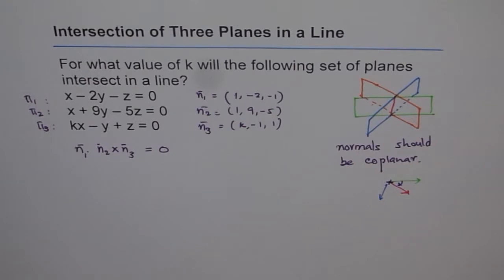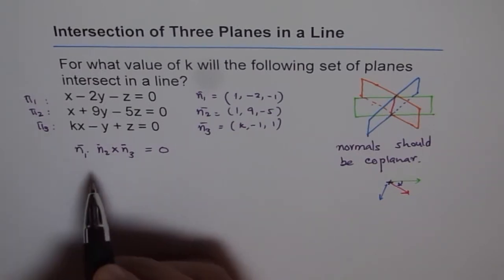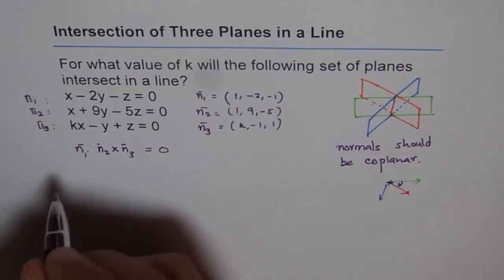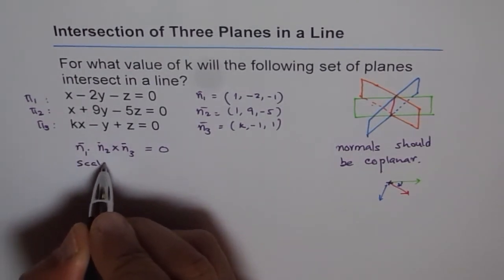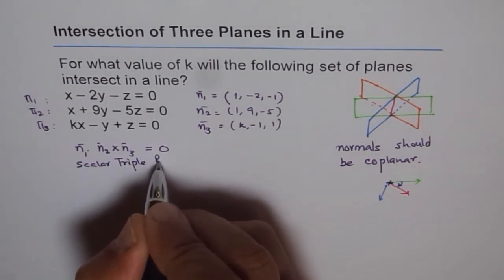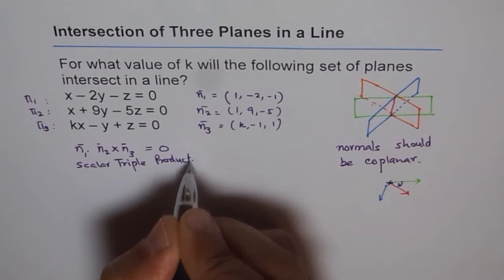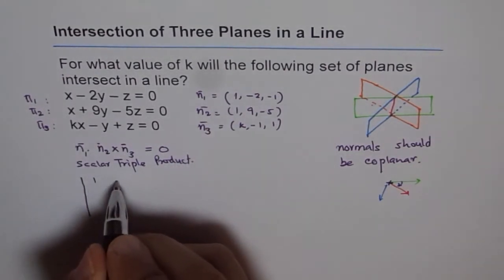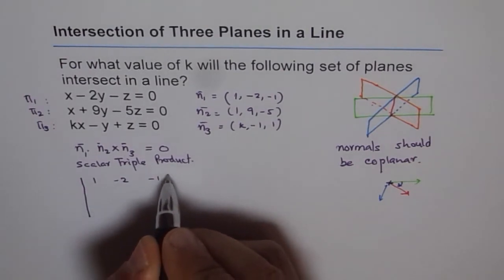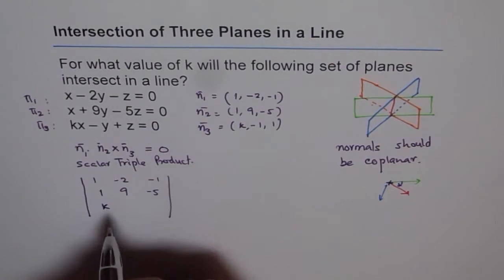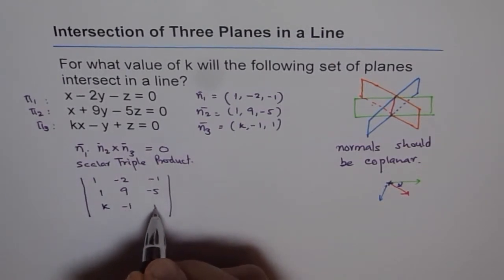So let's figure out this value of k by doing scalar triple product. This is called scalar triple product. Okay, so n1 is (1, -2, -1), (1, 9, -5) and we have (k, -1, 1).